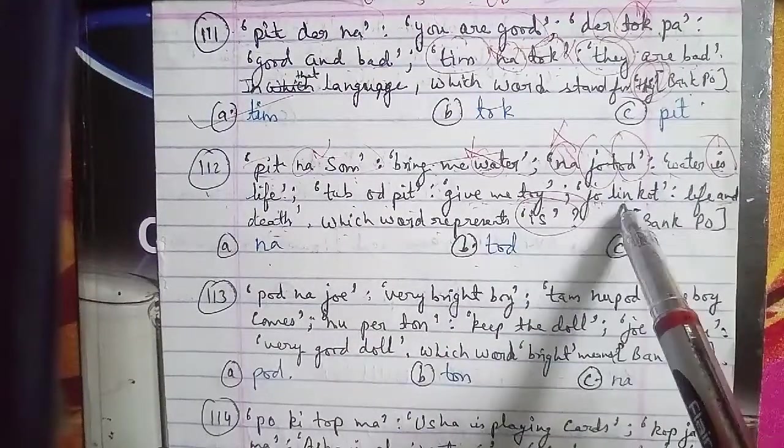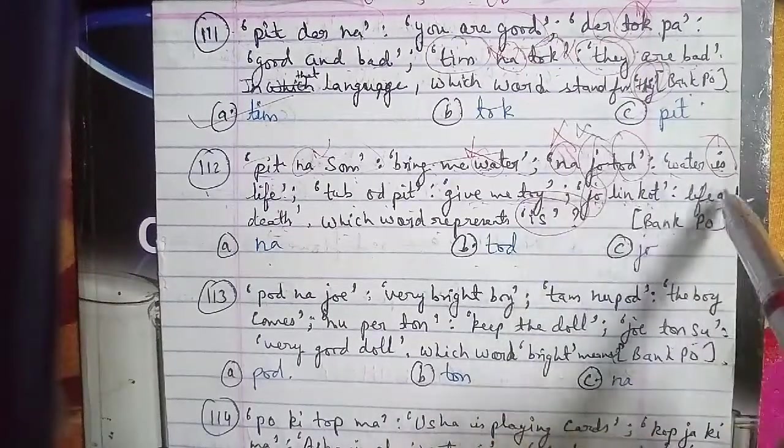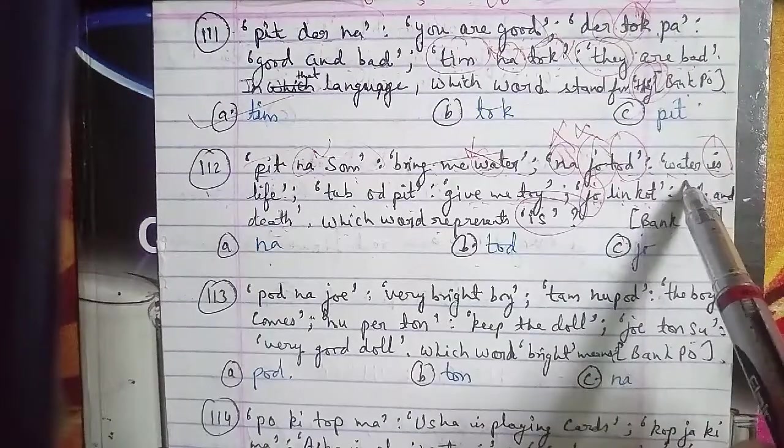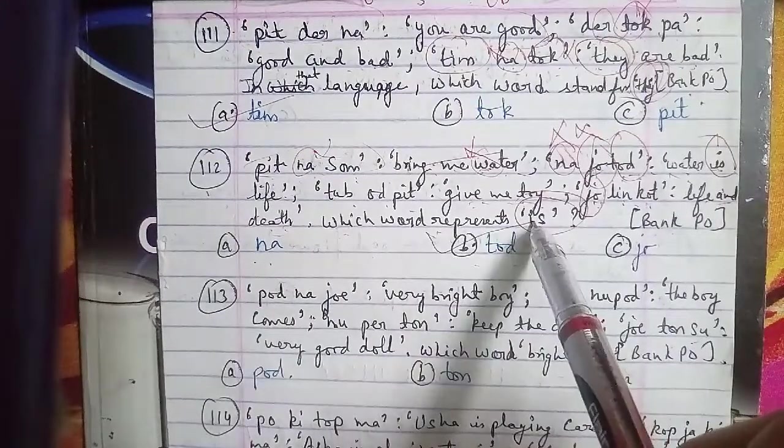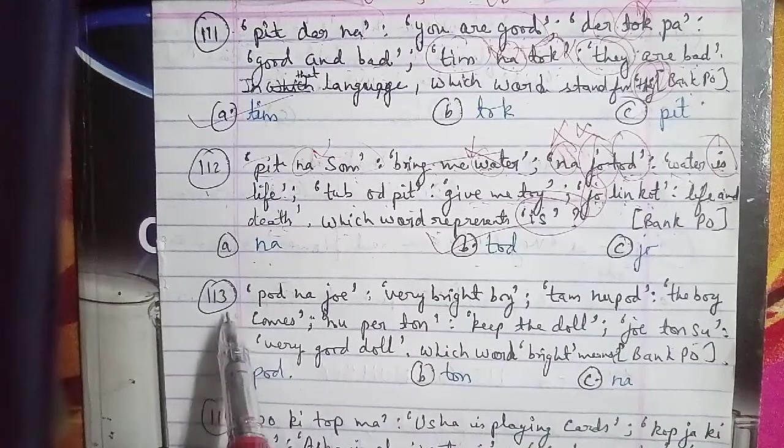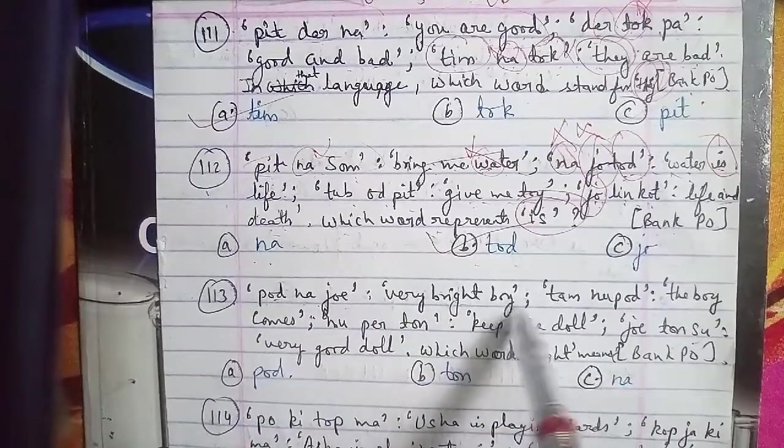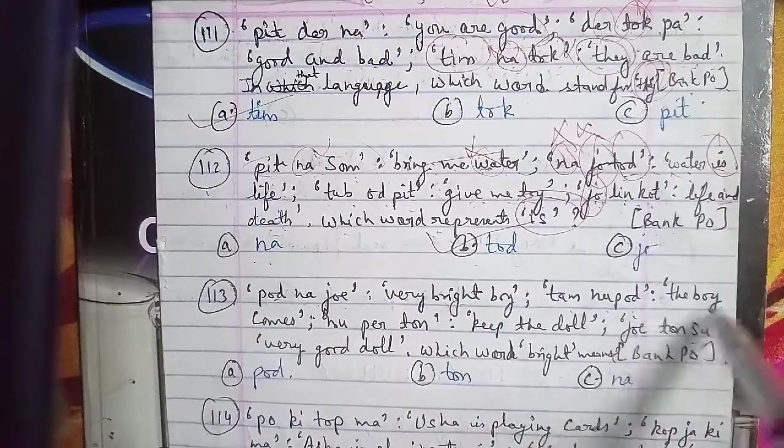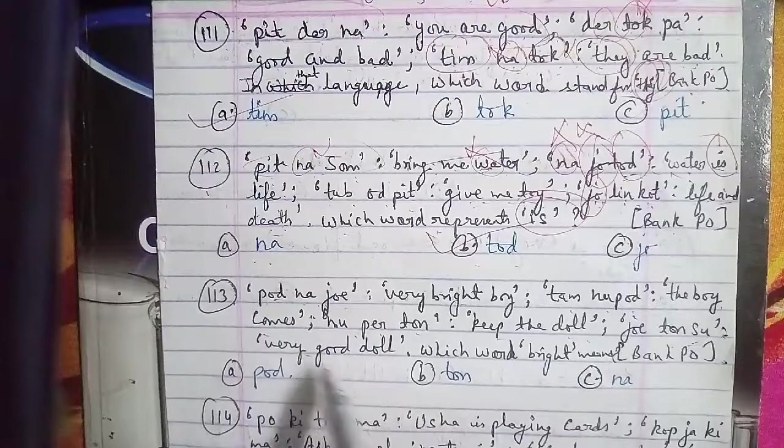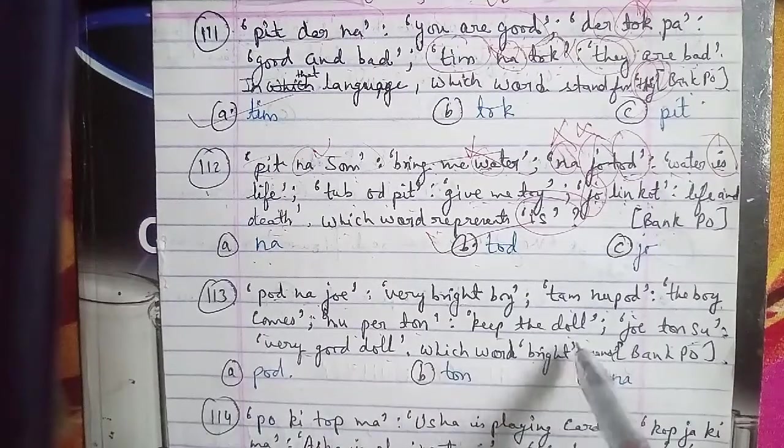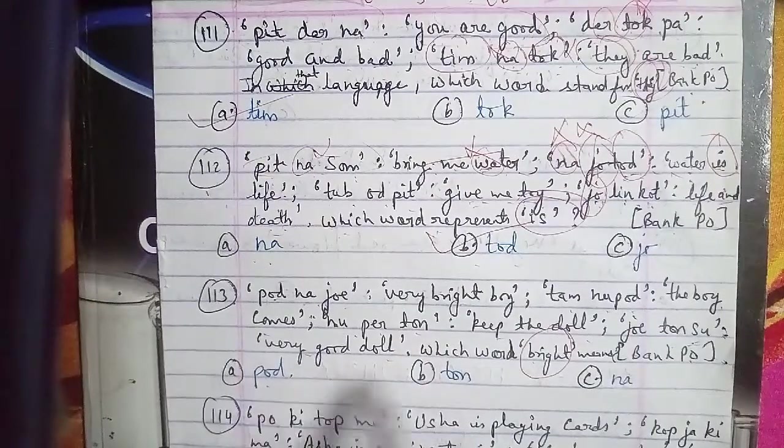Moving to question 113. Pod na joy is coded as 'very bright boy', tam nu pod is coded as 'the boy comes', nu purt on is 'keep the doll', and giant on su is 'very good doll'. Which word means bright? This is from a bank exam paper.